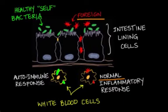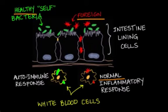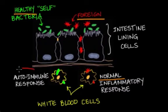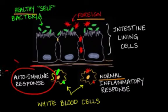But in people with IBD, the immune system mistakes food, healthy bacteria that normally live in the intestines, and other materials as foreign substances. As a result, white blood cells are sent to the lining of the intestines where they mount an immune response, and that's what causes chronic inflammation.